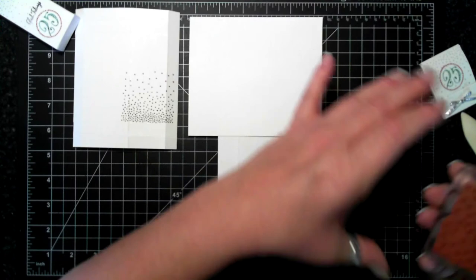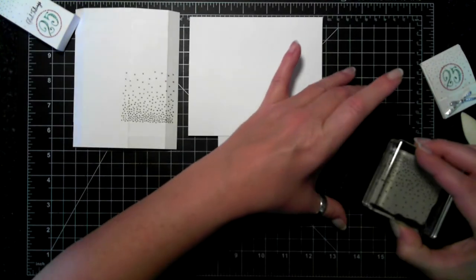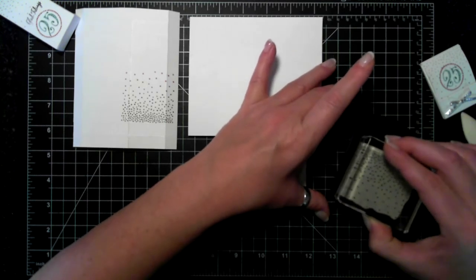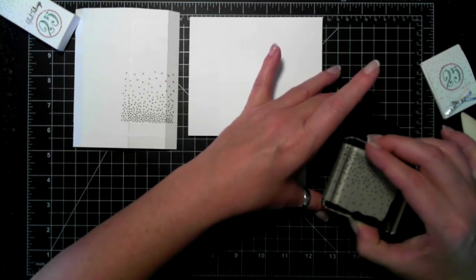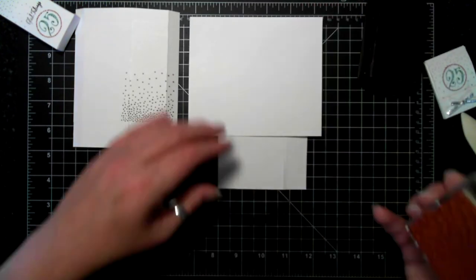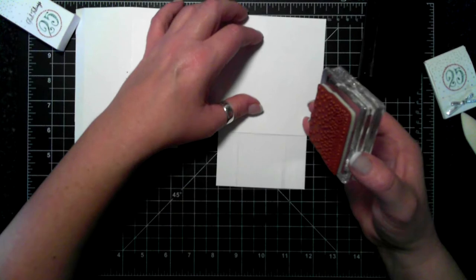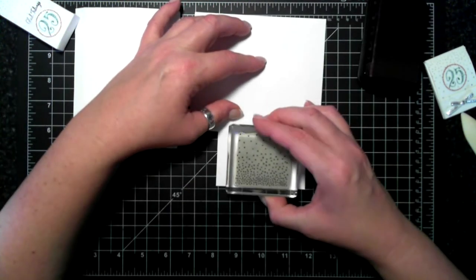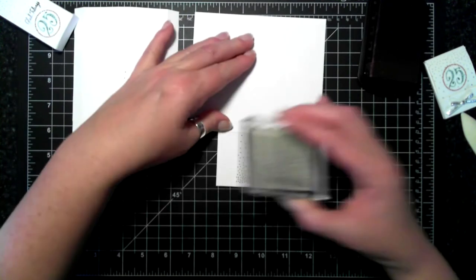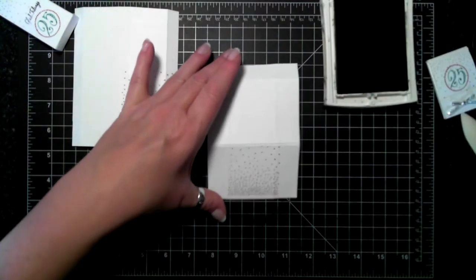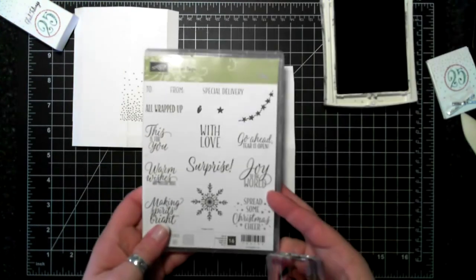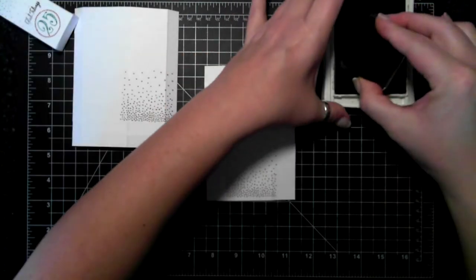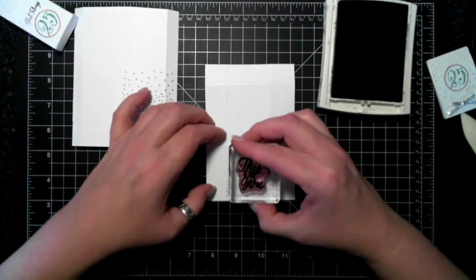And I'm going to do the same. I haven't used this ombre ink very much on video but I do like it. I'm going to just stamp with the Tin of Tags stamp set. This is for you in black archival. It's by far easier to stamp.